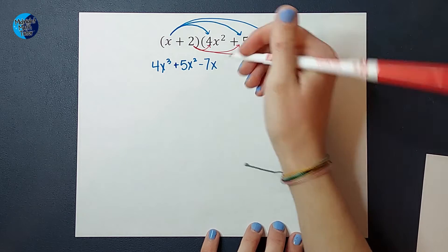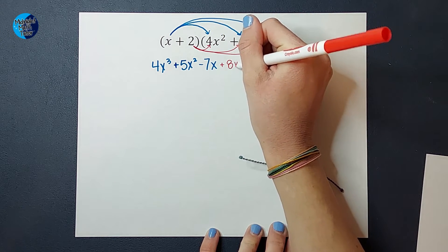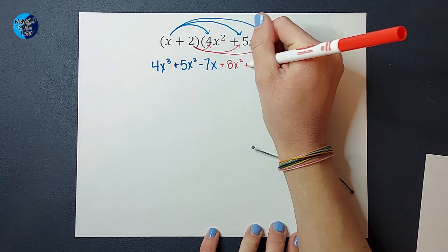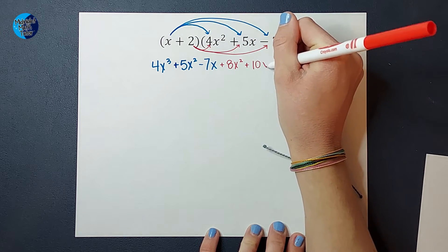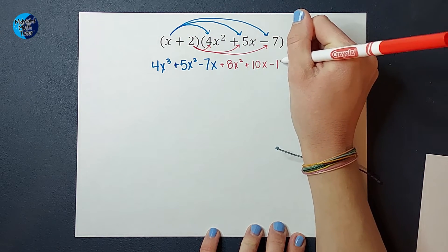2 times 4x squared is going to give me a positive 8x squared. 2 times 5x is going to give me a positive 10x. And 2 times a negative 7 is going to give me negative 14.